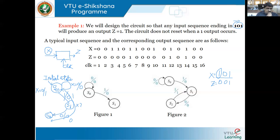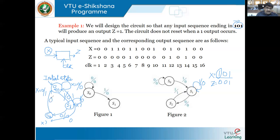At S1, if we encounter zero, move to S2; if we encounter one, remain in S1 with output zero. Now at S2: being in S2 means I have encountered one-zero. At S2, again I check x. If it is zero, go back to the initial state because I have not encountered one-zero-one. If I am at S2 and get one, that means I have encountered one-zero-one — let the output be one.